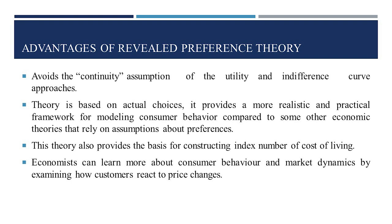This theory avoids the continuity assumption of utility and indifference curve approaches. An indifference curve is a continuous curve on which the consumer can have any combination of two goods. Samuelson believes there is discontinuity because the consumer can have only one combination in a particular situation. Since revealed preference theory is based on actual choices, it provides a more realistic and practical framework for modeling consumer behavior. This theory also provides the basis for constructing the index number of the cost of living.